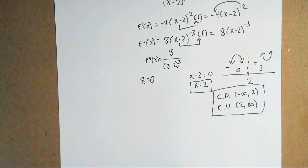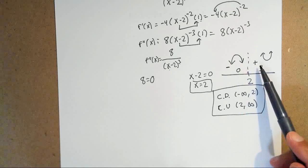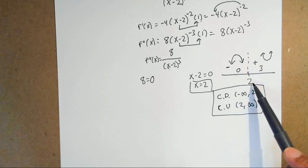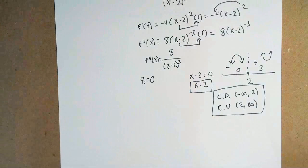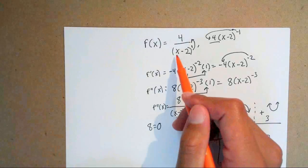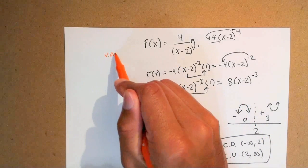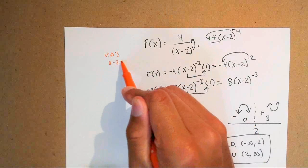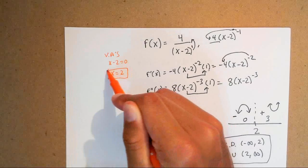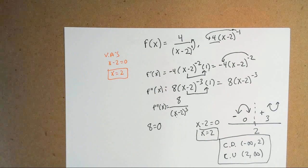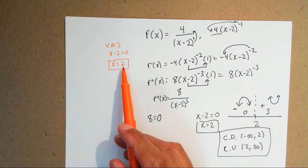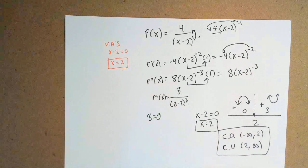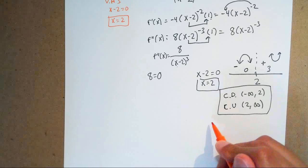Now, you might think there's a point of inflection at x equals 2 because concavity changes. But the problem is that 2 happens to be the vertical asymptote of the original equation. If you set the bottom of the original equation equal to 0, you get x equals 2. Because x equals 2 is a vertical asymptote, you cannot have a point of inflection there — there is no real point on x equals 2, so there is no point of inflection.